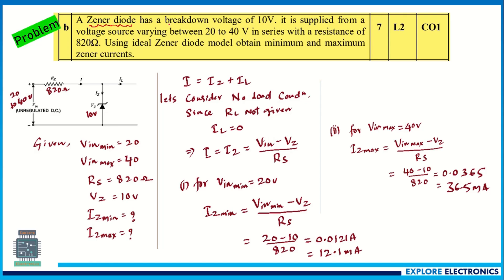The zener diode has a breakdown voltage Vz of 10 volts. It is supplied from a voltage source varying between 20 to 40 volts, so Vin minimum is 20 V and Vin maximum is 40 V. It is in series with a resistance of 820 ohms. Using an ideal zener diode model, we need to obtain the minimum and maximum zener currents.